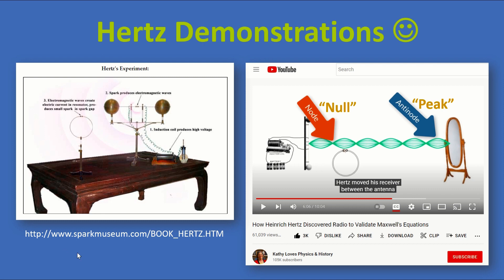And if this pattern of null peak null peak null peak for a standing wave was encountered when the experiment was done, when this receiver was moved along this line here, then there was good evidence that the radio waves were actually happening. And remember nobody knew anything about radio then. This was the first radio. If you want to dive into that in more detail, I've put the link to this photo here. It's sparkmuseum.com. And on the right, the YouTube video I was looking at is from an author called Kathy Loves Physics and History Channel. And you could search for how Heinrich Hertz discovered radio to validate Maxwell's equations. But I want to try this myself.